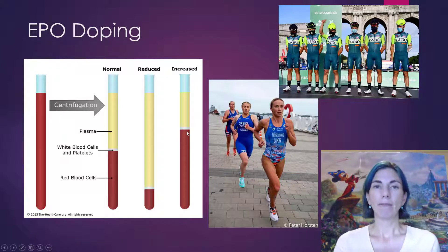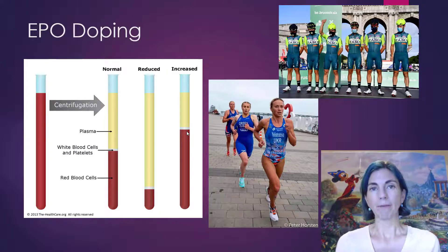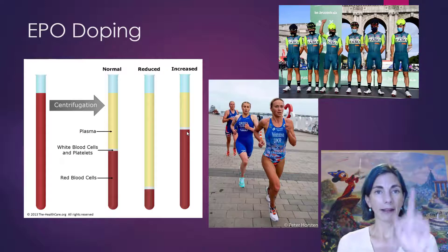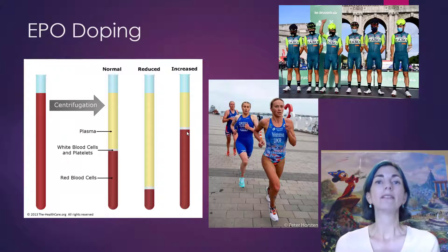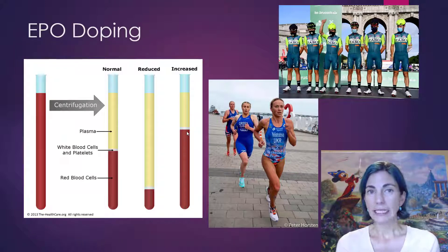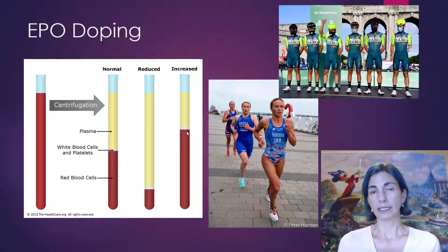There have been a number of famous cases of EPO doping. You can search 'EPO doping' in the news and find recent cases of someone being caught. It's typically found with triathletes, long-distance runners, and long-distance cyclists.